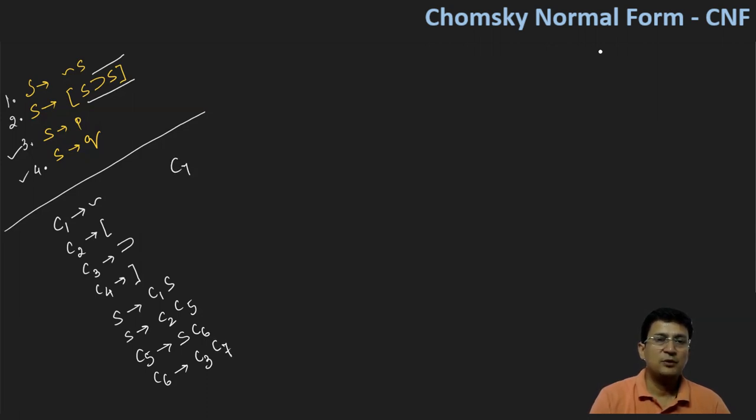Let's say we are resolving now C7. C7 produces S which is already a non-terminal followed by closing square bracket. Let's say that is C4. So these are the productions of the Chomsky normal form. So let's number them.